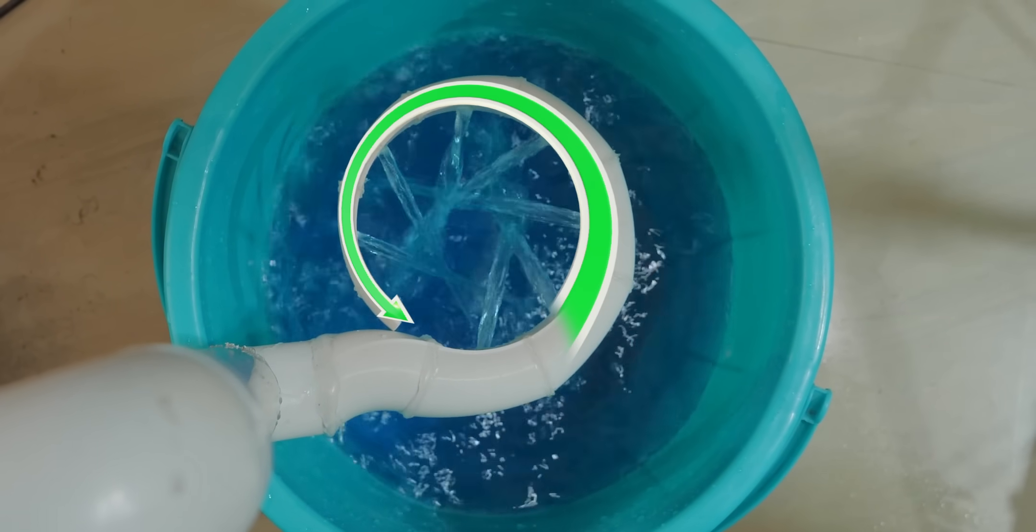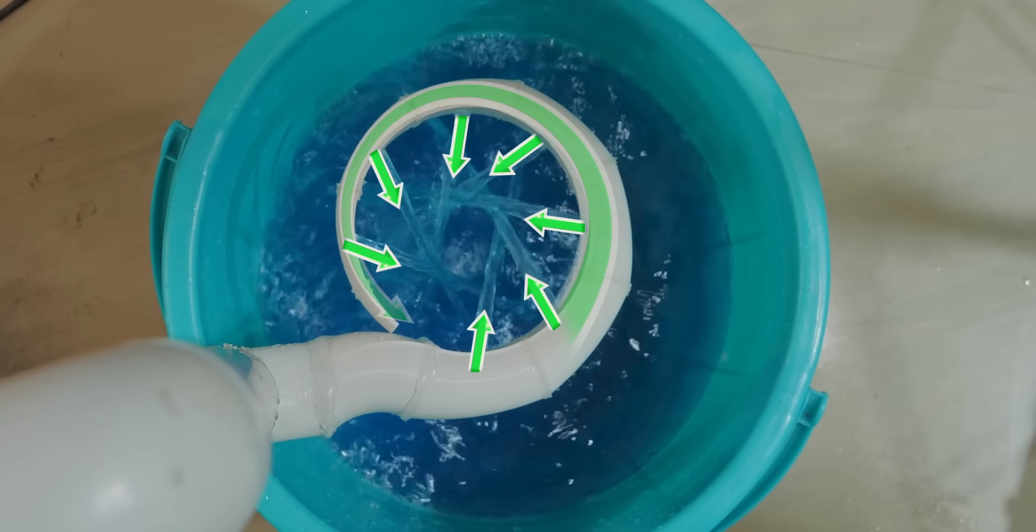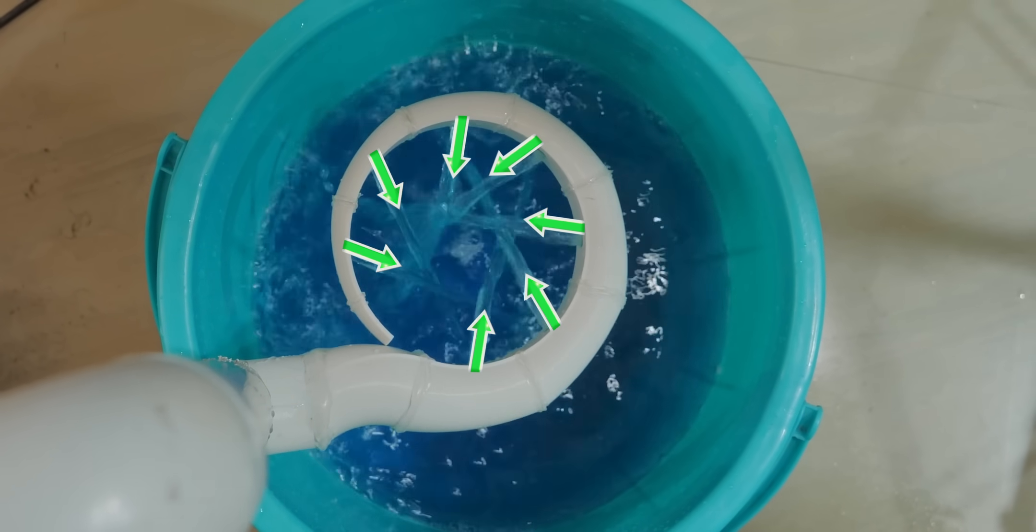In short, if you use a spiral casing for a Kaplan Turbine, all the runner blades will receive the water flow at the same rate.